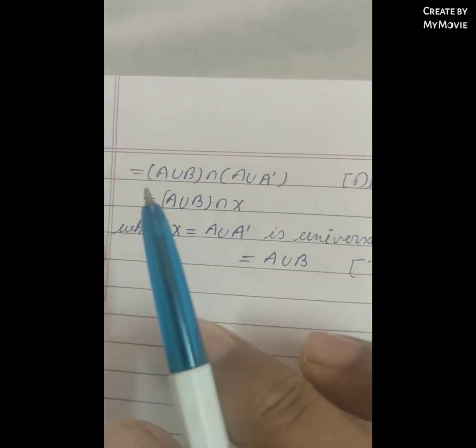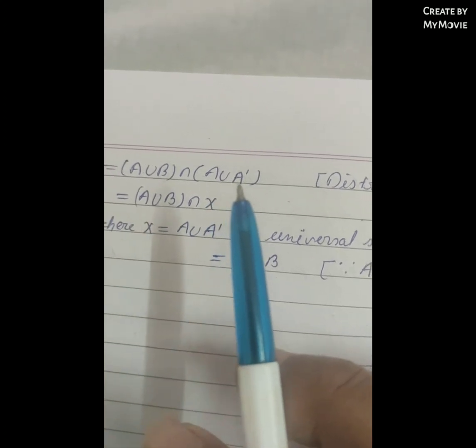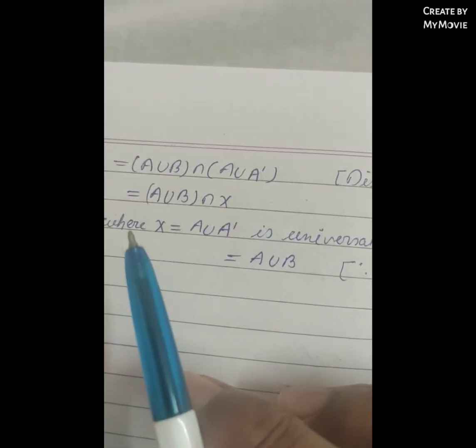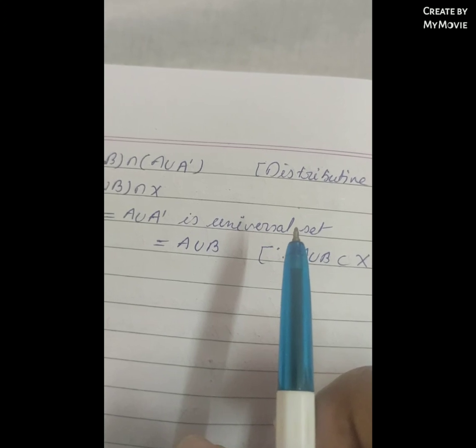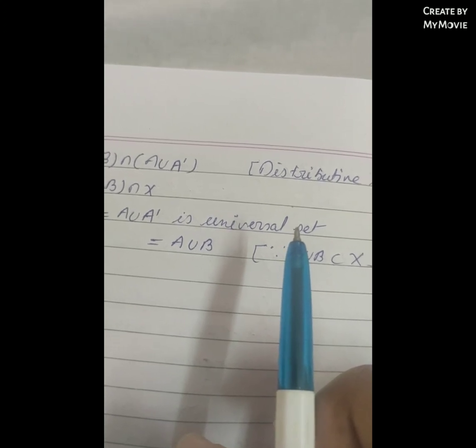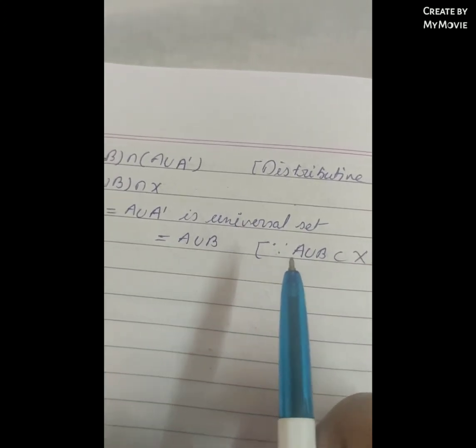By the distributive law, this equals (A∪B) ∩ (A∪A'). Now A∪A' is the universal set X, so this becomes (A∪B) ∩ X, which is equal to A∪B.